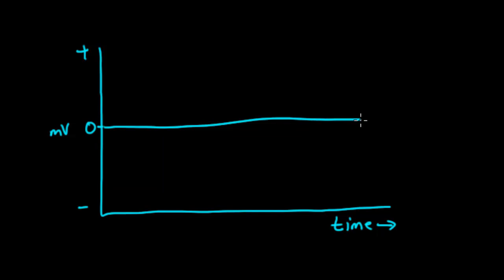The first type is our SA node. Those cells start out negative, and then they slowly creep up positive. Try to remember why that happens. The main reason is that you have increasing sodium permeability.